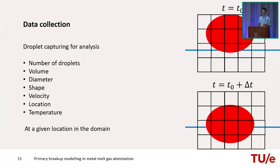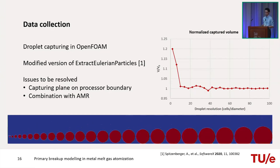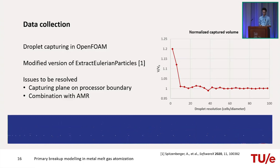Cells must also be connected in time — successive time steps show successive cross-sections of the same droplet, all needing to be attributed to the same droplet consistently. This functionality exists in OpenFOAM as 'Extract Eulerian Particles', but in version 2106 it does not perform well for connectivity in time and space. A modified version by Spitzenberger is available online and is currently being used.